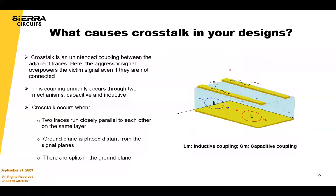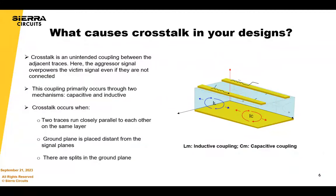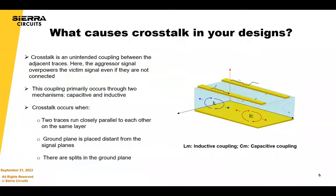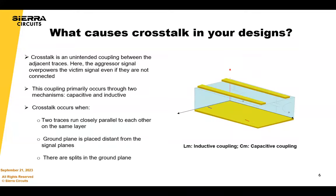Crosstalk is an unintended coupling between adjacent circuits of your board, where the aggressor signal overpowers the victim signal even if they're not connected. This coupling primarily occurs through capacitive and inductive coupling. Crosstalk occurs in your design when two traces run closely parallel to each other on the same layer.